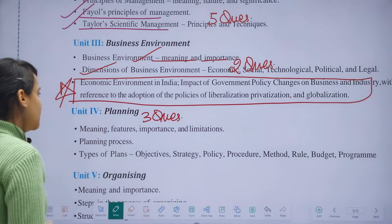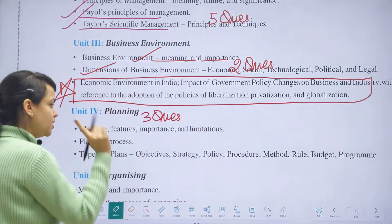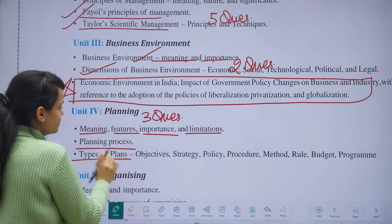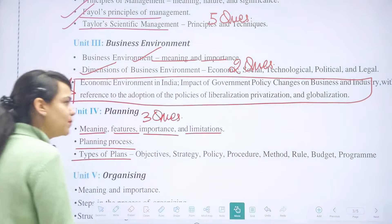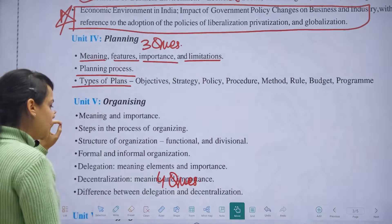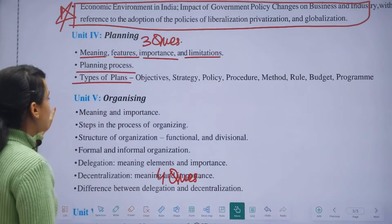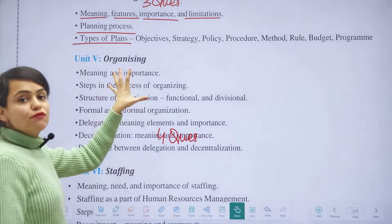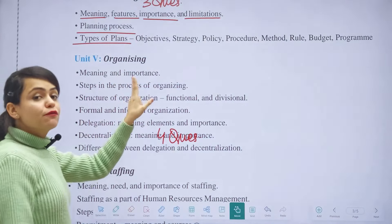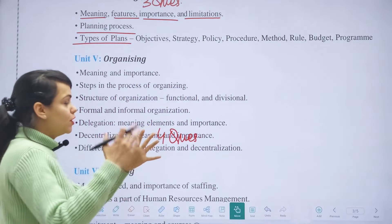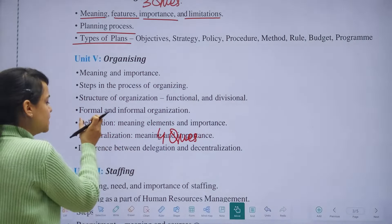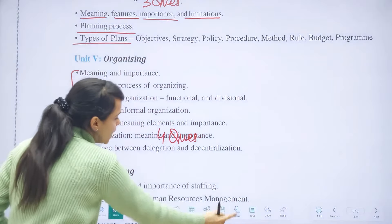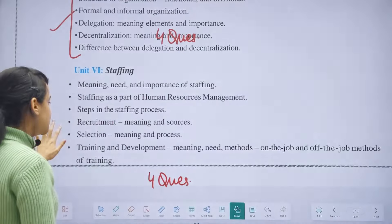In the Planning chapter, three questions were asked in the previous year paper. Topics include meaning, features, importance, limitations, the planning process, and types of plans — which you study for boards anyway. In Organizing, four questions were asked, covering meaning and importance, steps in the process of organizing, types of organization structures, formal and informal organization, delegation, decentralization, and the difference between delegation and decentralization — nothing new here.